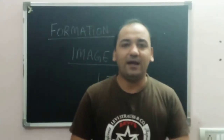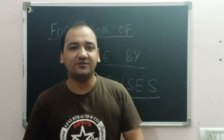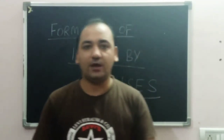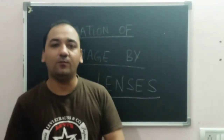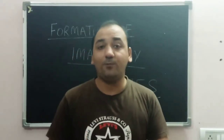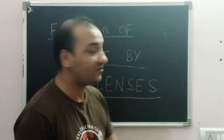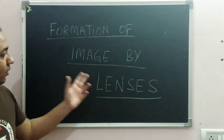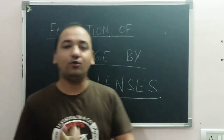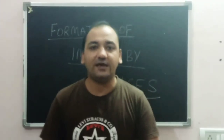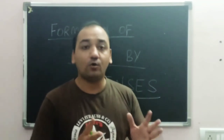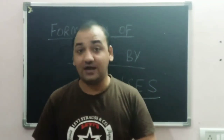Hello everyone and welcome back to the Back Benches Academy by Rohit Verma. I am Rohit Verma and we are here with another lesson we are going to discuss today. The topic we will discuss is the formation of image by lenses — the two lenses we have learned: convex lens which is converging, and concave lens which is diverging.